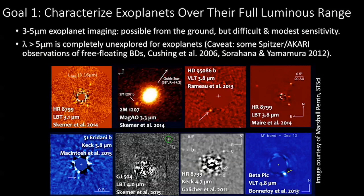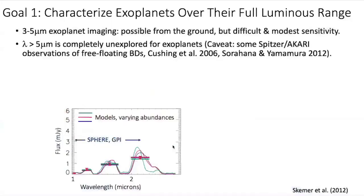The first goal is characterizing extrasolar planets over their full luminous range. This set of images is a collection of what we've been able to do from about 3 to 5 microns from the ground. It's possible to directly image extrasolar planets from ground-based observatories, but it's really challenging and we're limited to modest sensitivity. It's safe to say that wavelengths longward of about 5 microns are completely unexplored for extrasolar planets. There are some Spitzer observations of free-floating brown dwarfs, but this is really uncharted territory redward of about 5 microns — JWST is obviously going to change all of that.